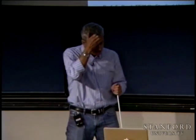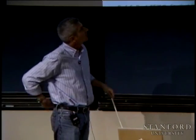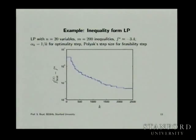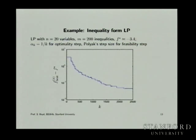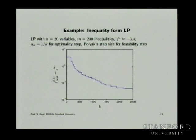Let's do an inequality-form LP example: minimize c^T x subject to Ax ≤ b, with 20 variables and 200 inequalities. The optimal value for that instance is minus 3.4, and we use a 1/k step size.